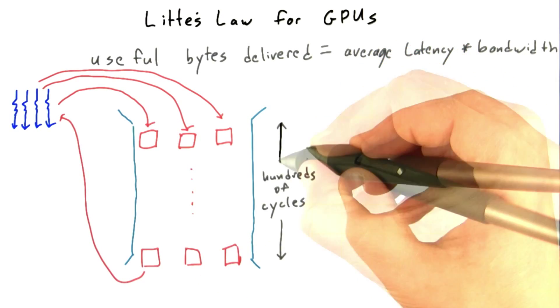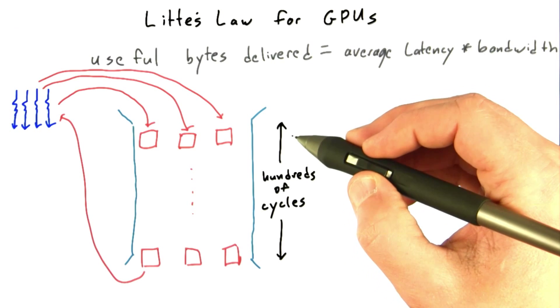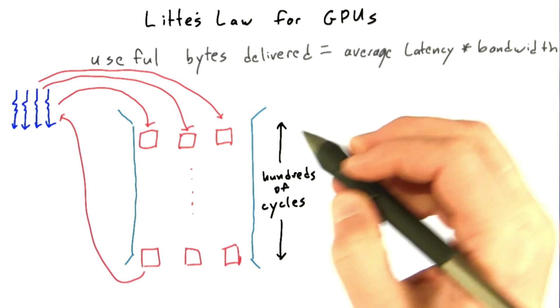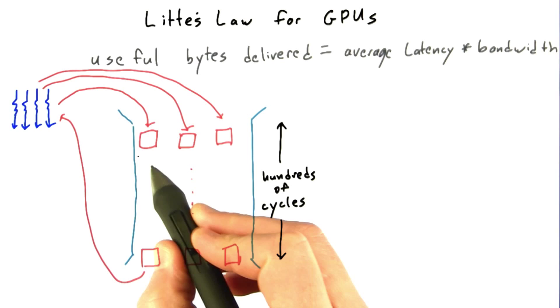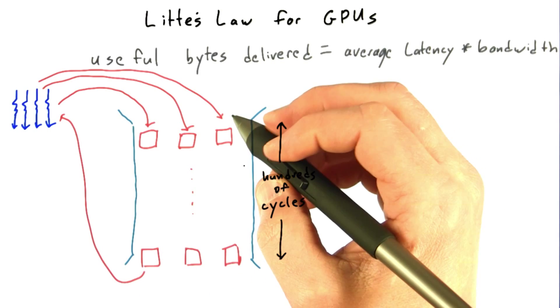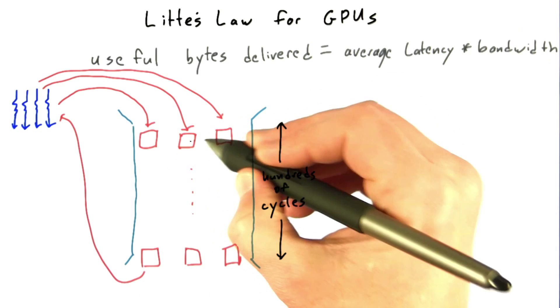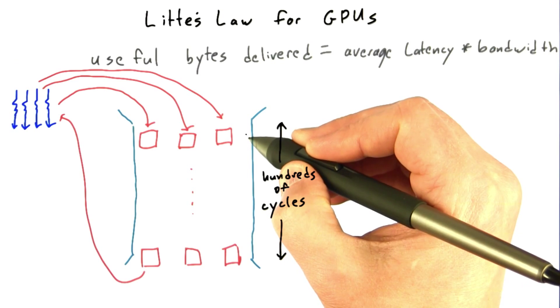Now, the pipe is really deep. It takes 200 or 300 clock cycles for a transaction to move through this pipe. And the pipe is also really thick and wide. It's designed to be filled with many transactions at the same time from lots of SMs running lots of threads.